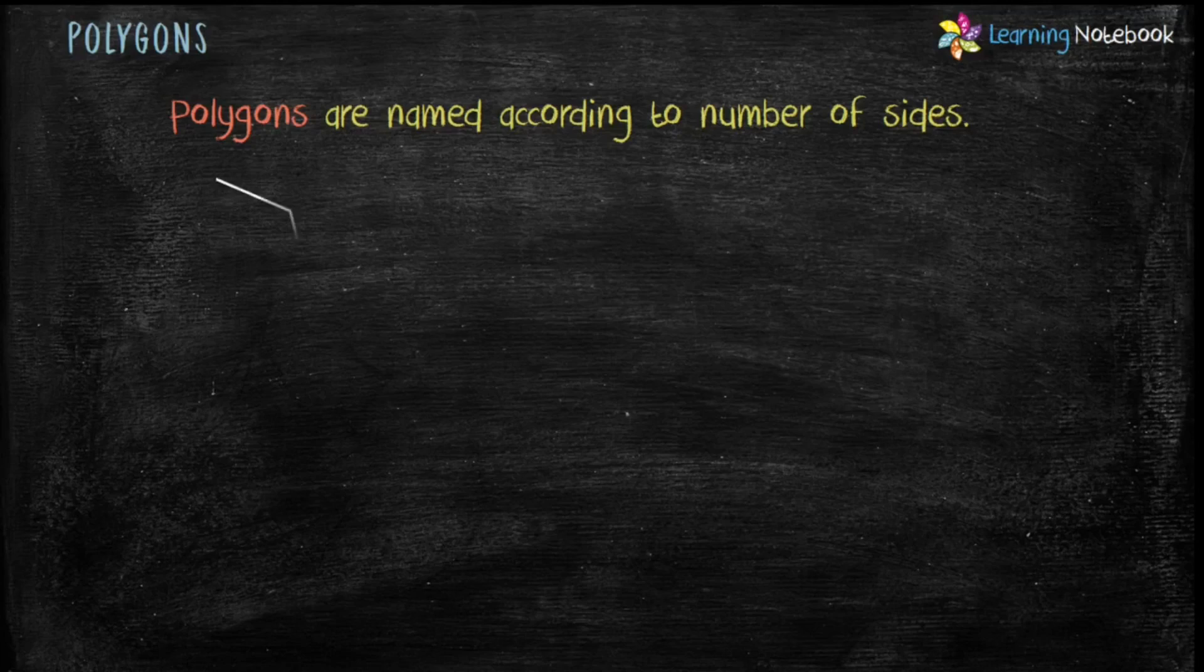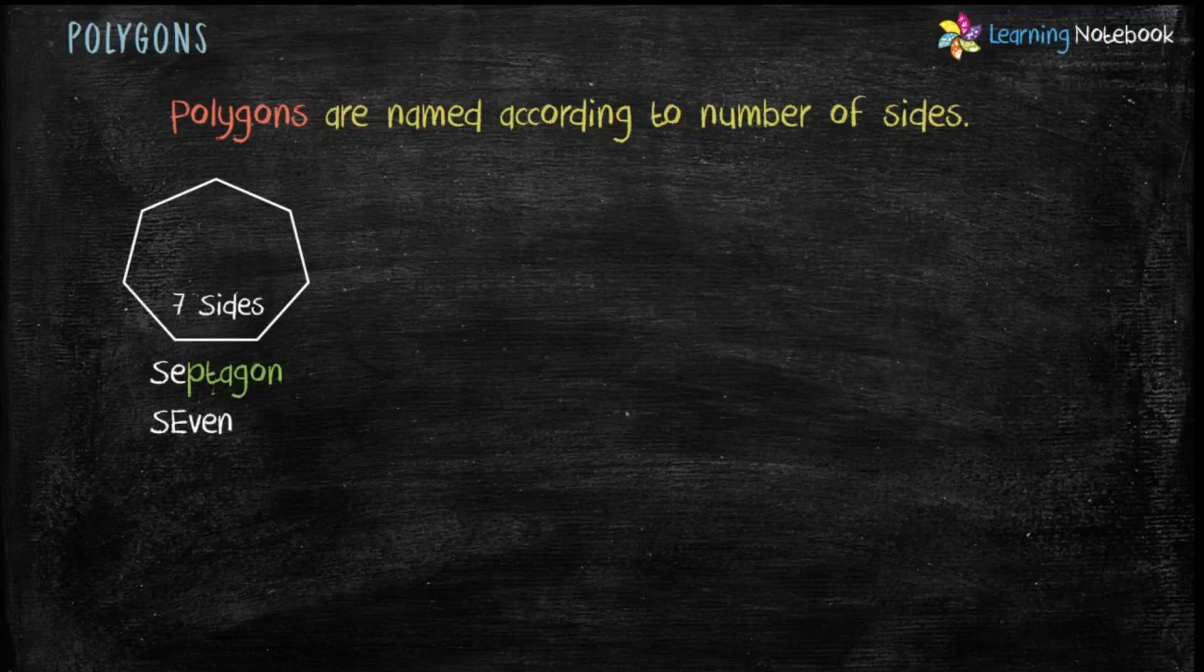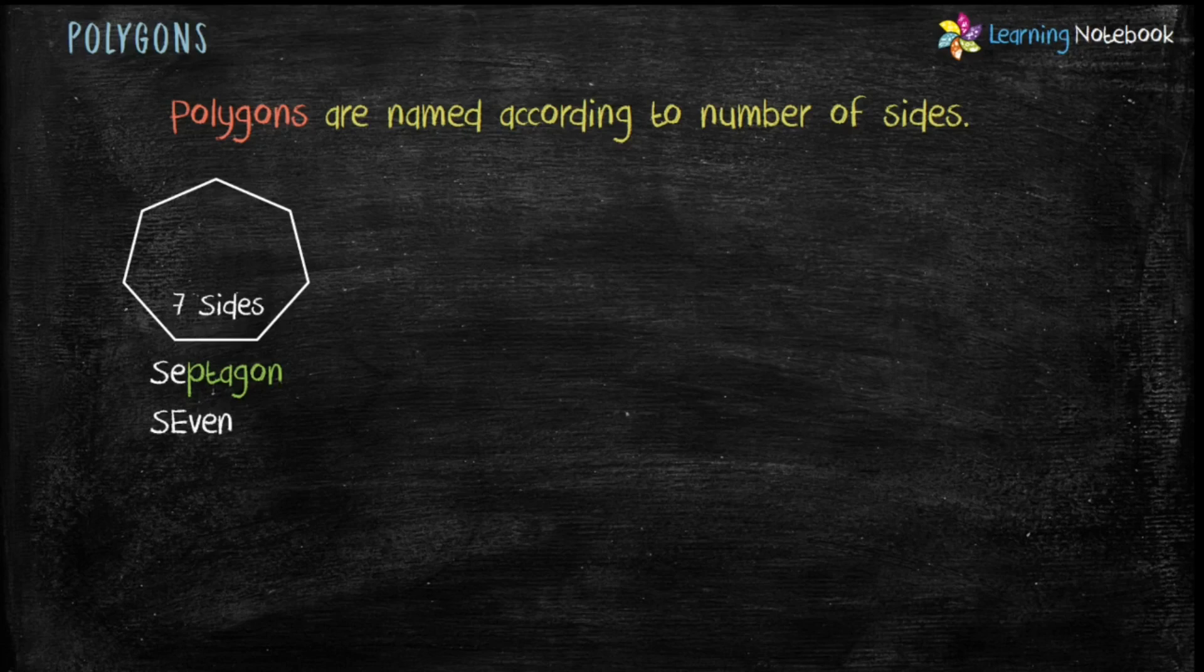A polygon with seven sides is called septagon. You can remember septagon from seven. As both words, septagon and seven have initial letters SE.